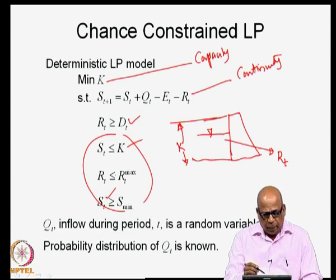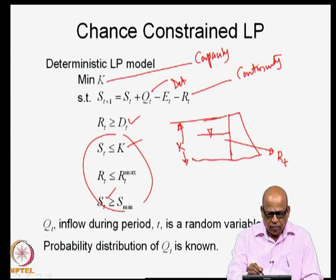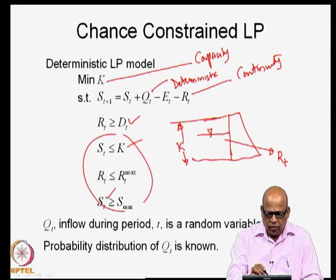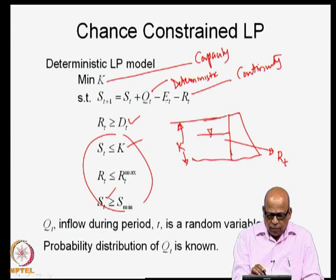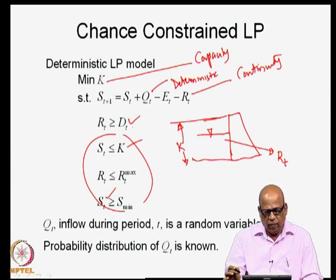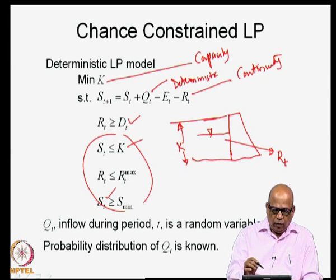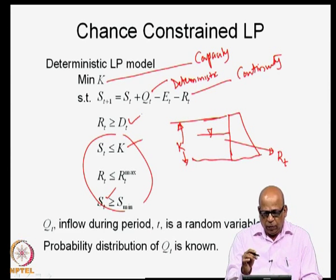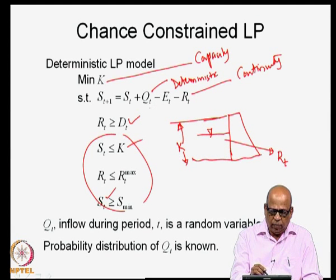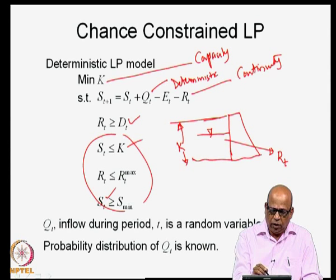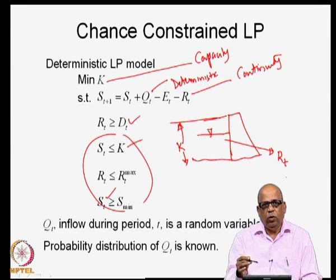If you want to introduce randomness — the uncertainty associated with hydrologic variables Q_t and E_t — then you can no longer write any constraint that contains Q_t explicitly as a deterministic constraint. You can only write them as constraints containing probability distributions. We will now see how we incorporate that, starting from the deterministic optimization and addressing uncertainties associated with the randomness in the hydrologic variables.